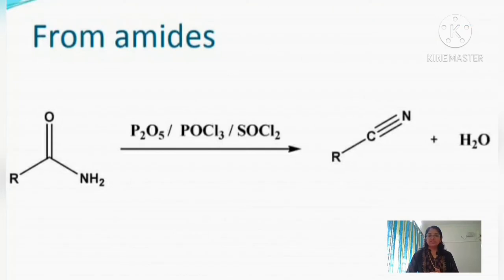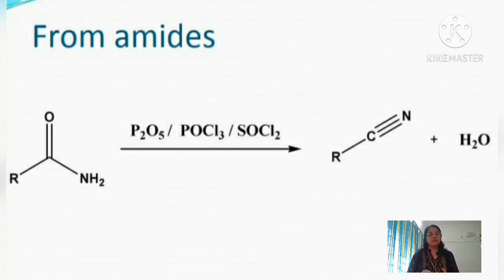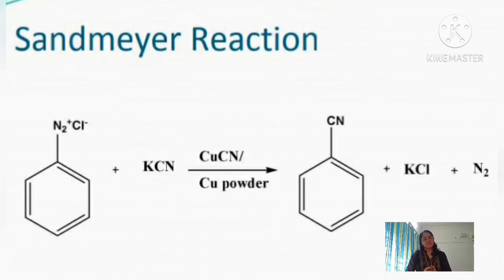The next method of preparation is from primary amides. Amide has the functional group -CONH₂. When primary amides are treated with a dehydrating agent such as P₂O₅ (phosphorus pentoxide), POCl₃ (phosphorus oxychloride), or cyanuric chloride, we obtain a cyanide compound with the elimination of a water molecule from the amide.